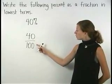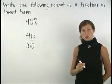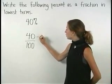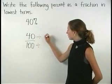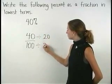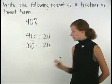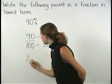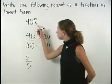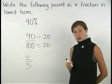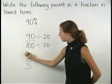Notice however, the 40 over 100 is not in lowest terms. So we need to divide the numerator and the denominator by 20, which gives us 2 over 5. So 40 percent can be written as the fraction 2 fifths.